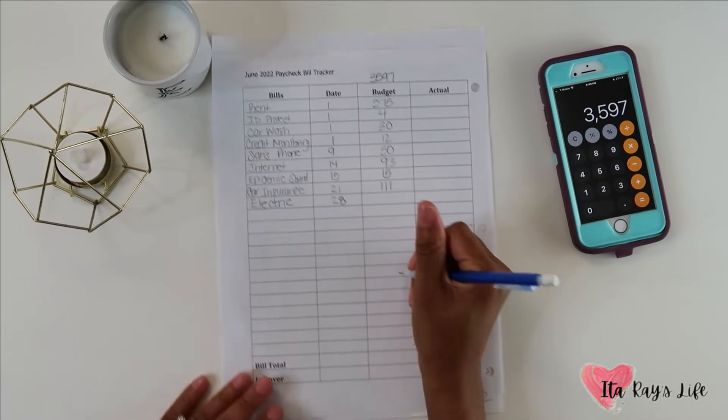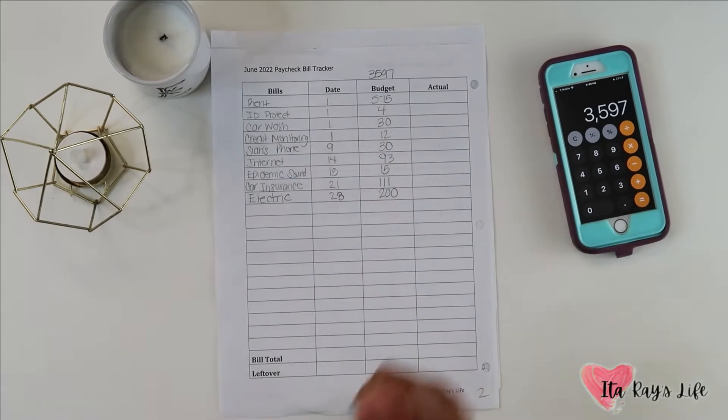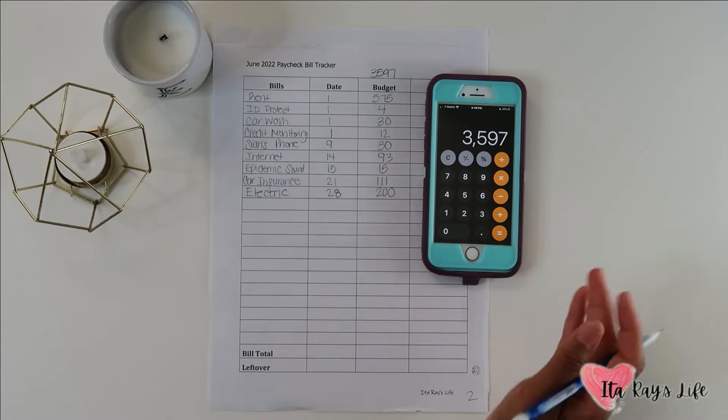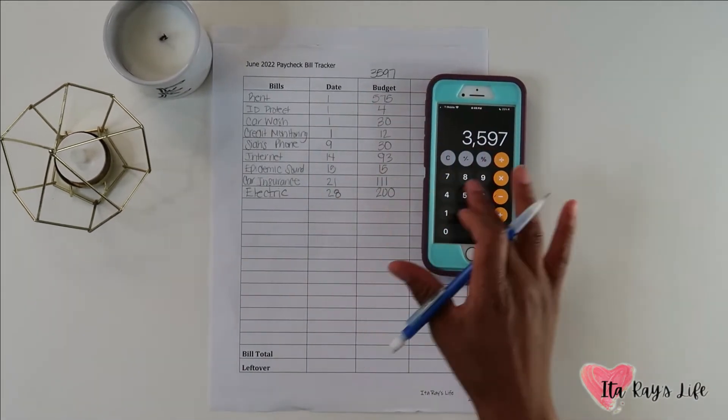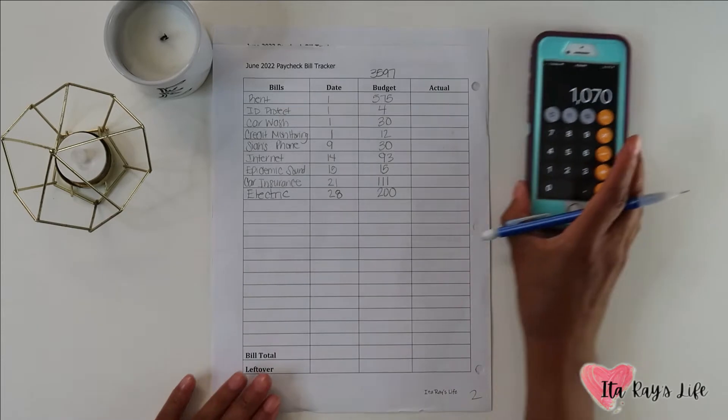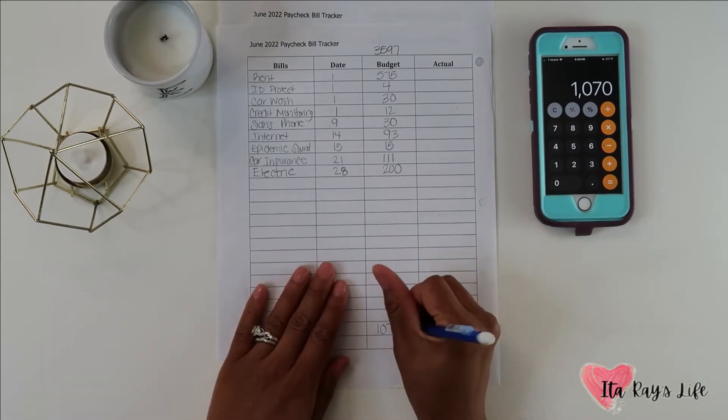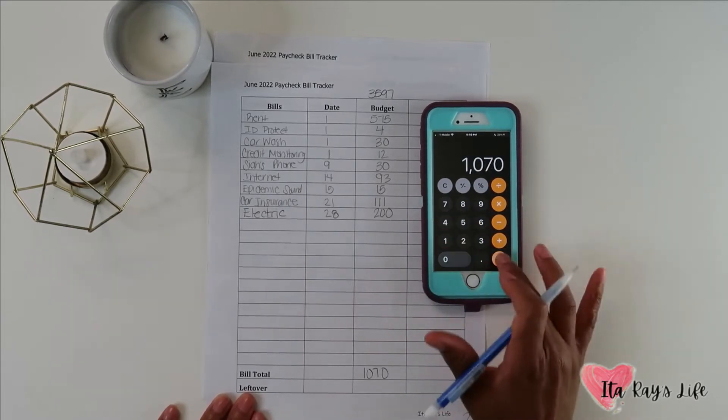Electric, I am going to budget $200 for that. Typically I budget $250 but it hasn't been that much so I'm just going to go ahead and budget $200. For the past several months it's been under $200, so now watch, June it's going to be like $500 or something. Let's not put that out in the universe. Let's go ahead and add all of these together. That gives us a total of $2,070.